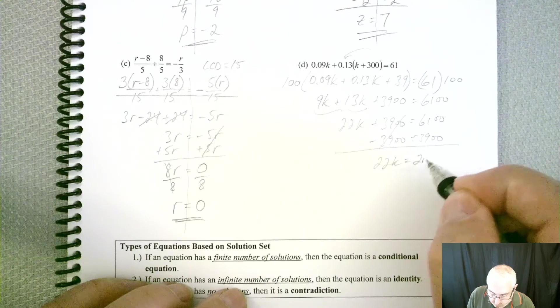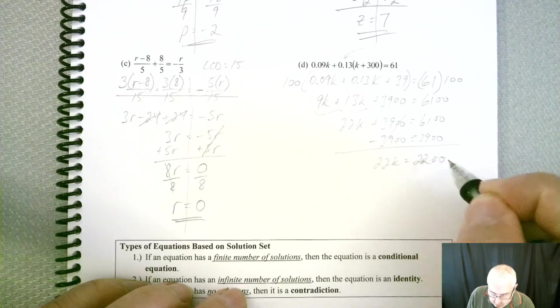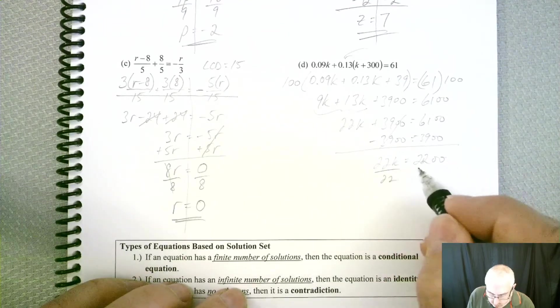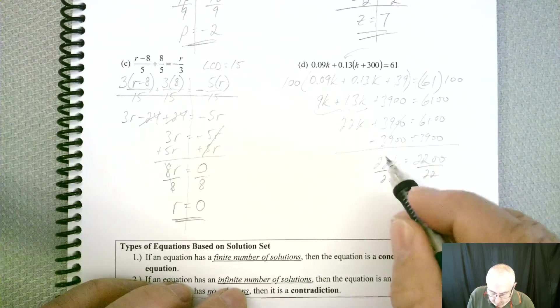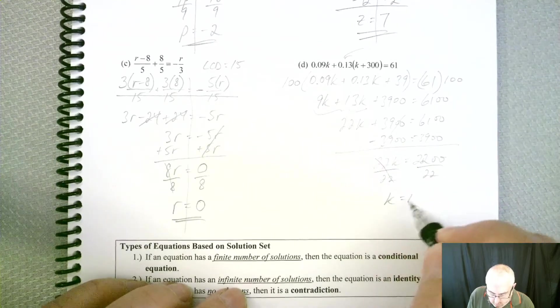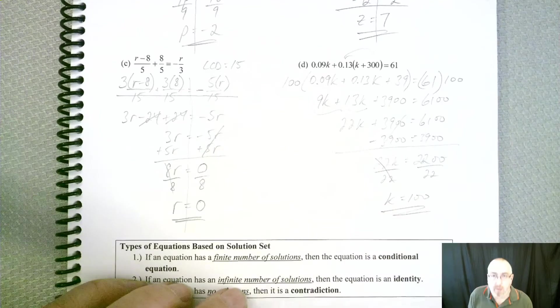I think that might be 2,200. And then we can get rid of the 22 by dividing. We have k equal to 100.